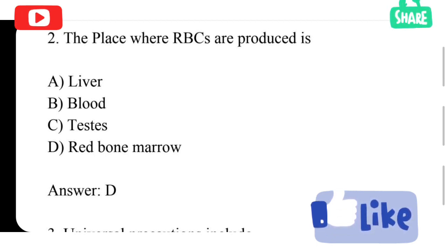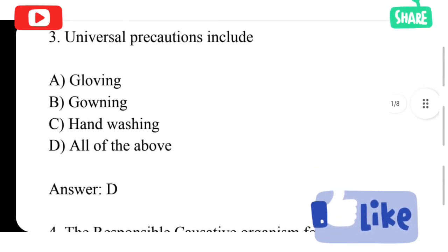Next question. Universal precautions includes: gloving, gowning, hand washing, all of the above. All of the above is the correct answer. Gloves, gowning, and hand washing protocol follow - all are universal precautions.